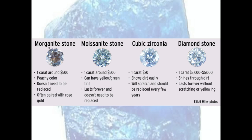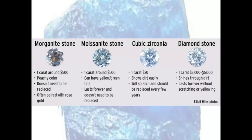There are other minerals that are diamond-like in appearance — morganite and moissanite are two of them. Because they are synthetic as opposed to naturally occurring, they have a much lower cost. A carat of cubic zirconia is about $20, a carat of moissanite or morganite can be around $500, and the same quality diamond can be between $3,000 and $5,000 — a very big difference even though they're essentially the same thing. The naturally occurring mineral is much more expensive.